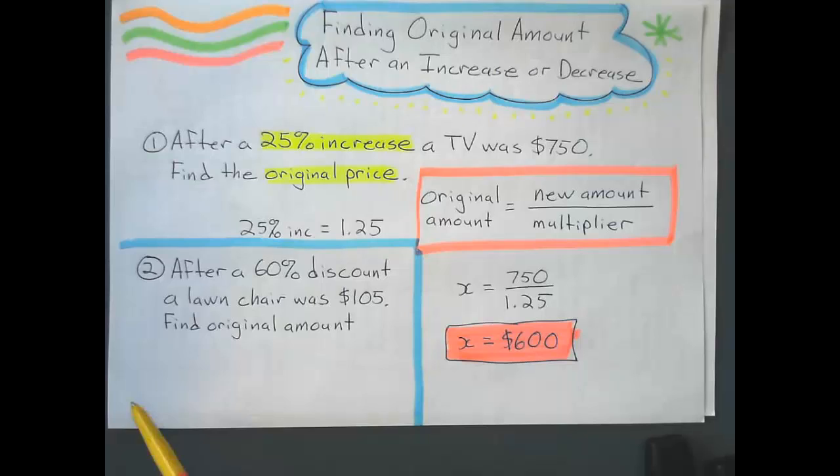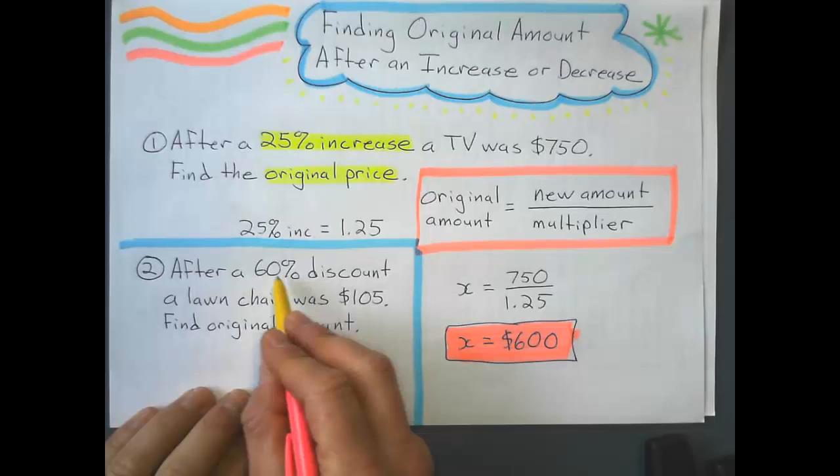Let's try this one with a discount. After a 60% discount, a lawn chair was $105. Find the original amount. First step is to find the multiplier.